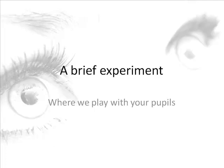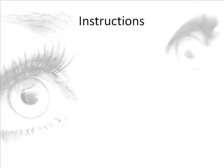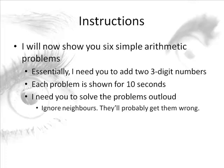We'll do a brief experiment. There are eye trackers hidden everywhere — you don't need to sign up because the data will be destroyed at the end of the talk. Bear with me and look at the screen. You'll see six simple arithmetic problems where you'll be asked to add two three-digit numbers. You'll see each problem for ten seconds. Don't copy your neighbour. Try and solve them out loud — it's very important that you do try.